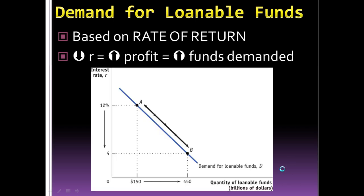When it comes to the demand for loanable funds, it's based on a rate of return. Investment happens when the rate of return is equal to or greater than the price of borrowing. So we see a downward sloping demand curve. If the interest rate is high, there are very few projects with a rate of return equal to that high rate, so there's less need for loanable funds. As the interest rate drops, more projects become profitable and there's a greater need for loanable funds.